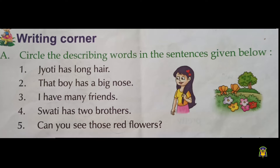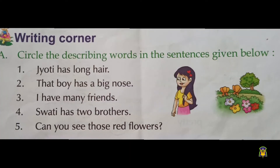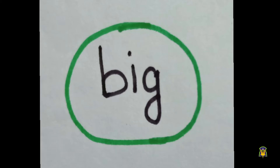First one: Jody has long hair. Children, can you tell the answer — which word is the describing word? Long. Jody has long hair, so you have to circle the word 'long.' Second one: That boy has a big nose. Can you tell the answer? Big. Big is the describing word. That boy has a big nose.